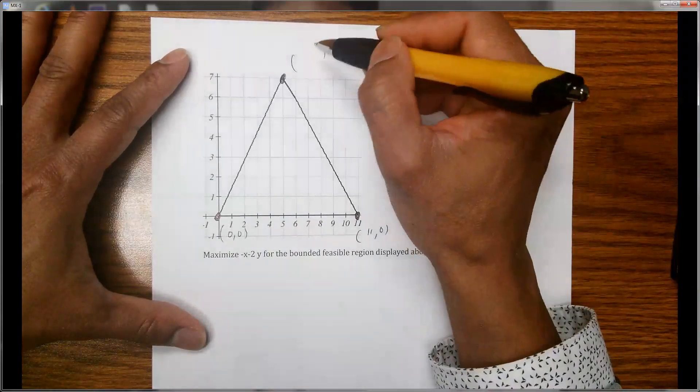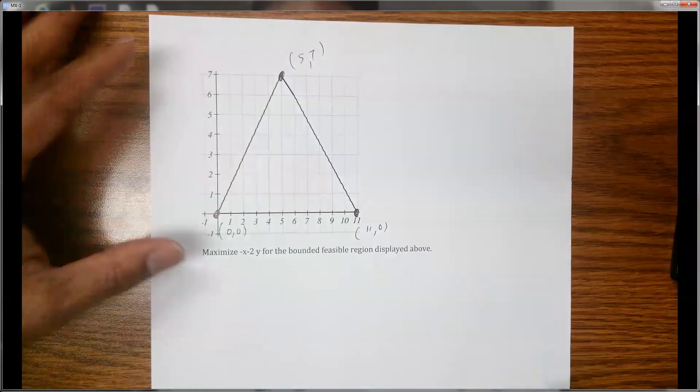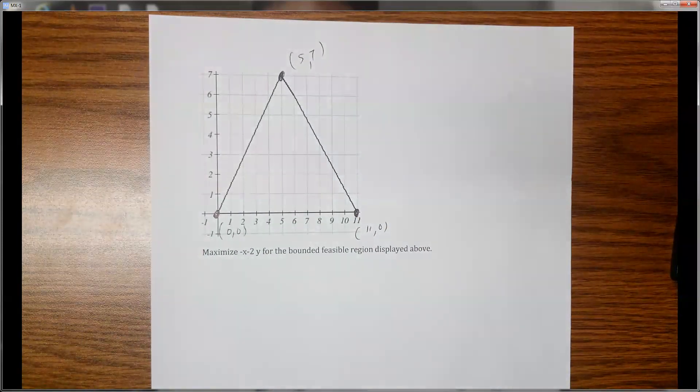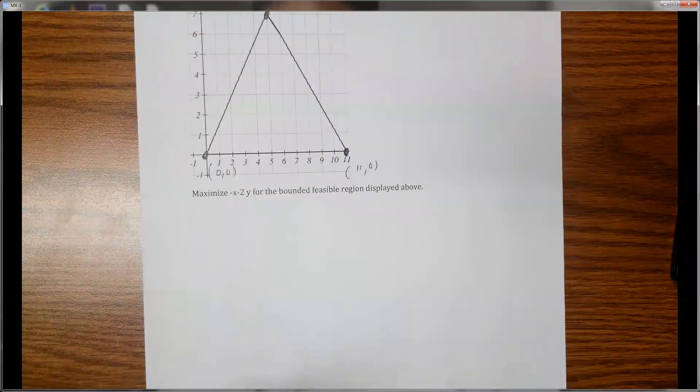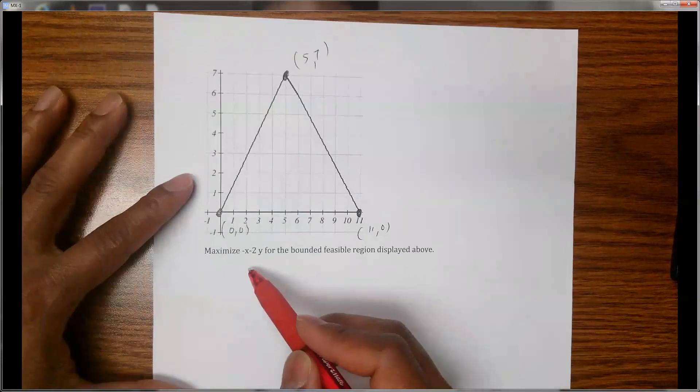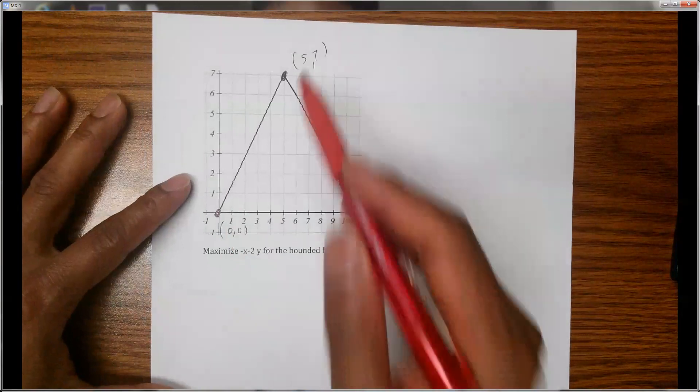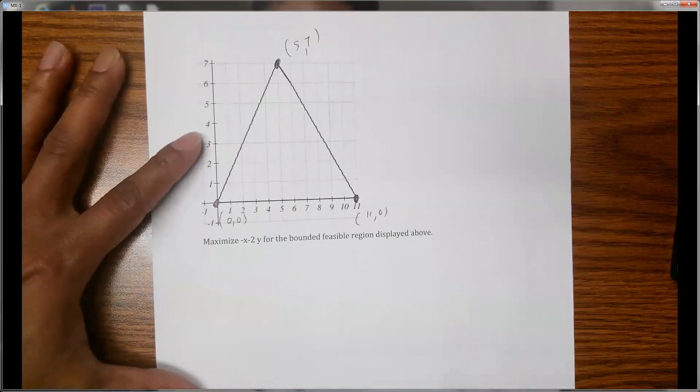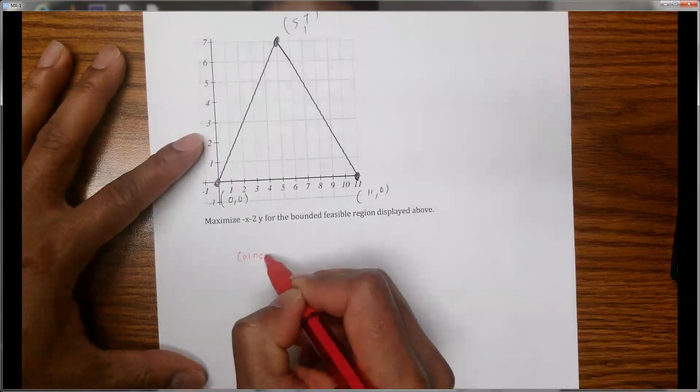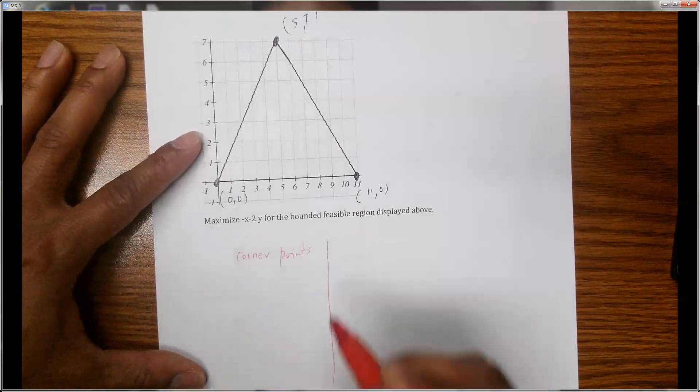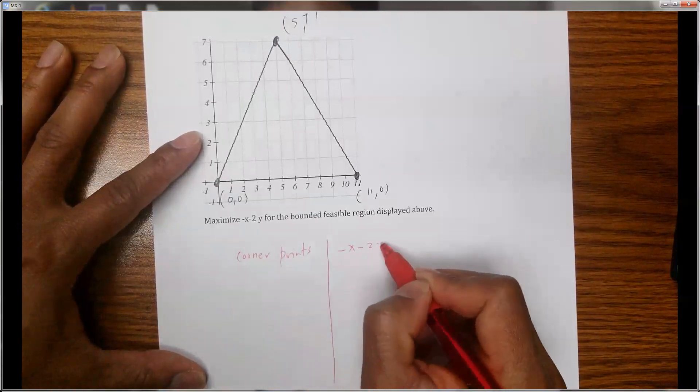To maximize this formula, we just have to find out the value of this formula at these three corner points. So we have corner points and then the formula which is x - 2y.